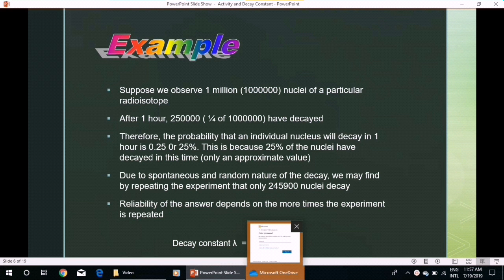Count rate is smaller if the GM tube is farther from the source. Therefore, our measurements give a received count rate and is significantly lower than the activity. Activity can be deduced from the count rate if efficiency of our detecting system is known. Significant level of background radiation must be subtracted to give the corrected count rate.